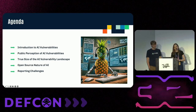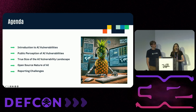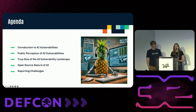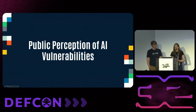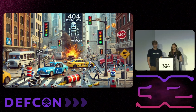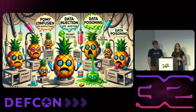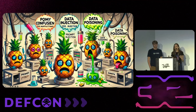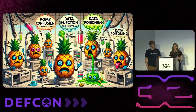Then we're going to go into the public perception of AI vulnerabilities and the true size of that landscape, where Cas basically owns that space. Then I'll dive into the open source nature of AI and the reporting challenges. We did do some research with Bugcrowd, HackerOne, and Intigriti, so big thanks to them for being transparent with us about what they're seeing and experiencing. When we think about AI vulnerabilities, it seems like the whole world thinks of this end-of-the-world scenario — and yes, that is an AI-generated image over there, so they're not good yet.